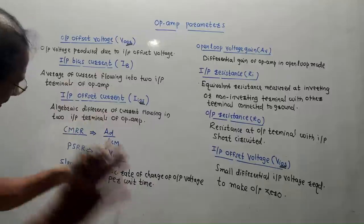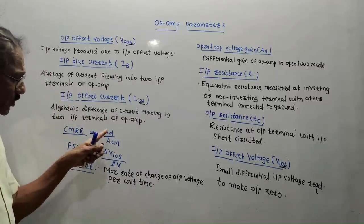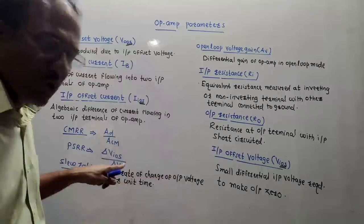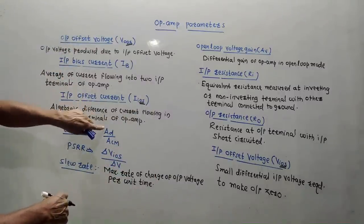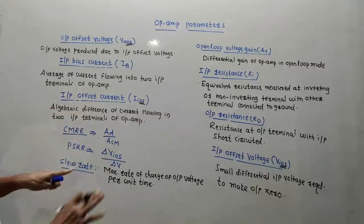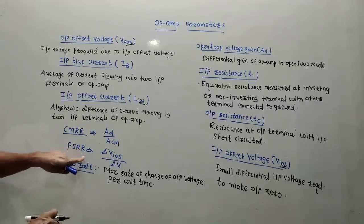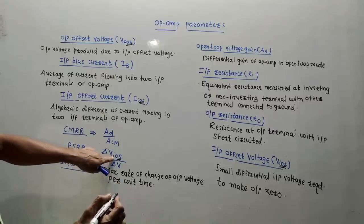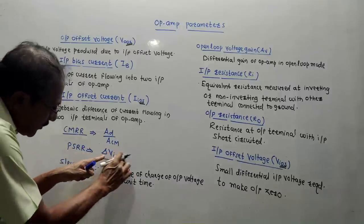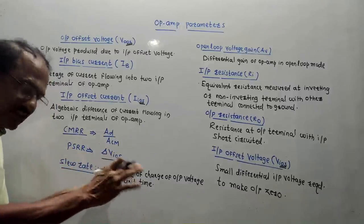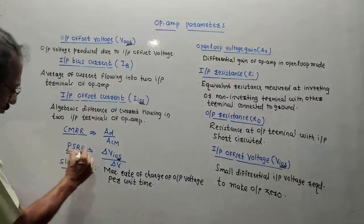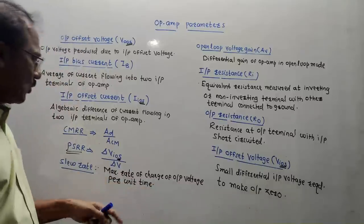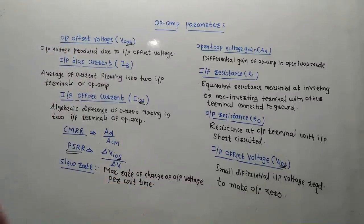Common mode rejection ratio (CMRR): just remember the formula — it is the ratio of A_D (differential gain) to A_CM (common mode gain) of the op-amp. Power supply rejection ratio (PSRR): it is the ratio of the change in input offset voltage (ΔV_IOS) to the change in supply voltage (ΔV). Last, and very important, is slew rate: it is the maximum rate of change of output voltage per unit time.